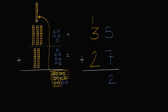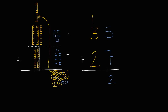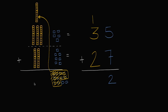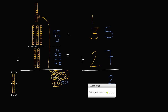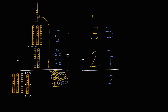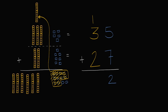And now we can add the tens place. We have one ten plus three tens plus two tens. Well, that's going to be six tens — one plus three plus two is six. We have one, two, three, four, five, six tens. So one plus three plus two tens is going to be six tens. Thirty-five plus twenty-seven is sixty-two — six tens and two ones. Sixty-two.